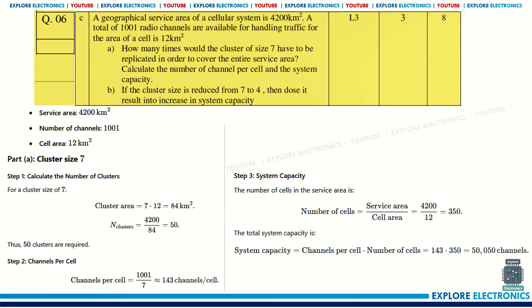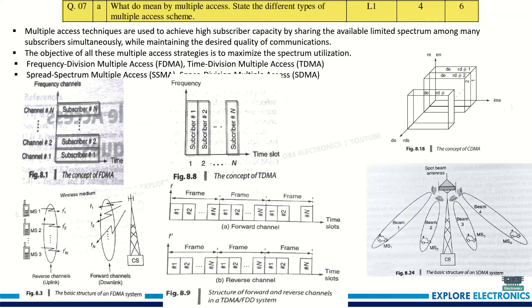There is a problem on geographical service area to calculate the number of channels and system capacity, covered in the previous video. What do you mean by multiple access? There are three main multiple access schemes: TDMA, FDMA, and CDMA. In FDMA, each subscriber is given a different frequency. In TDMA, the same frequency is used with different time slots allocated. In CDMA, code division multiple access uses a particular code encoding method with the same frequency at the same time.